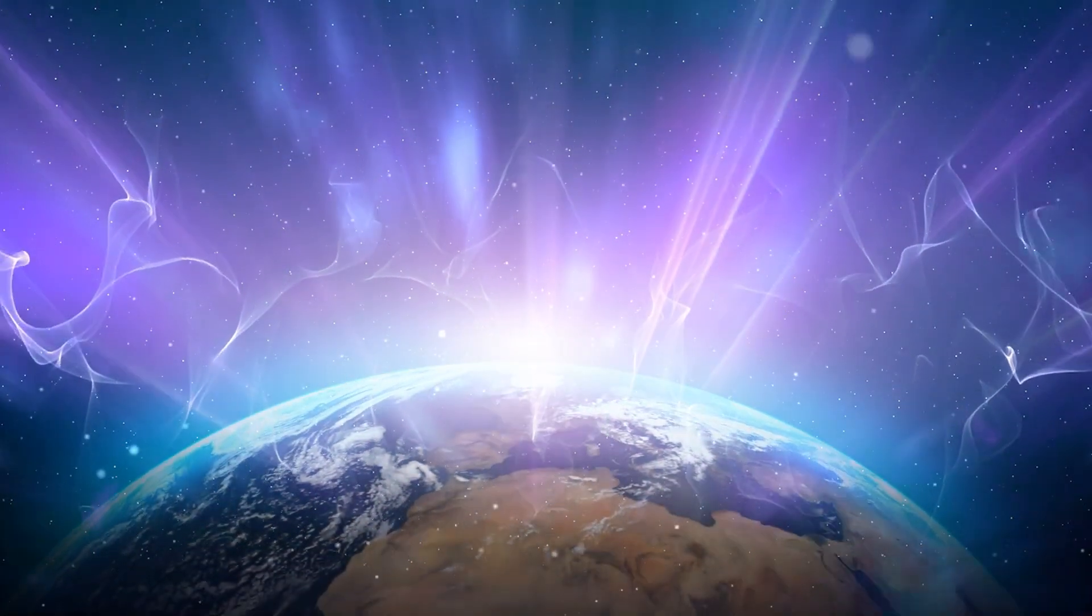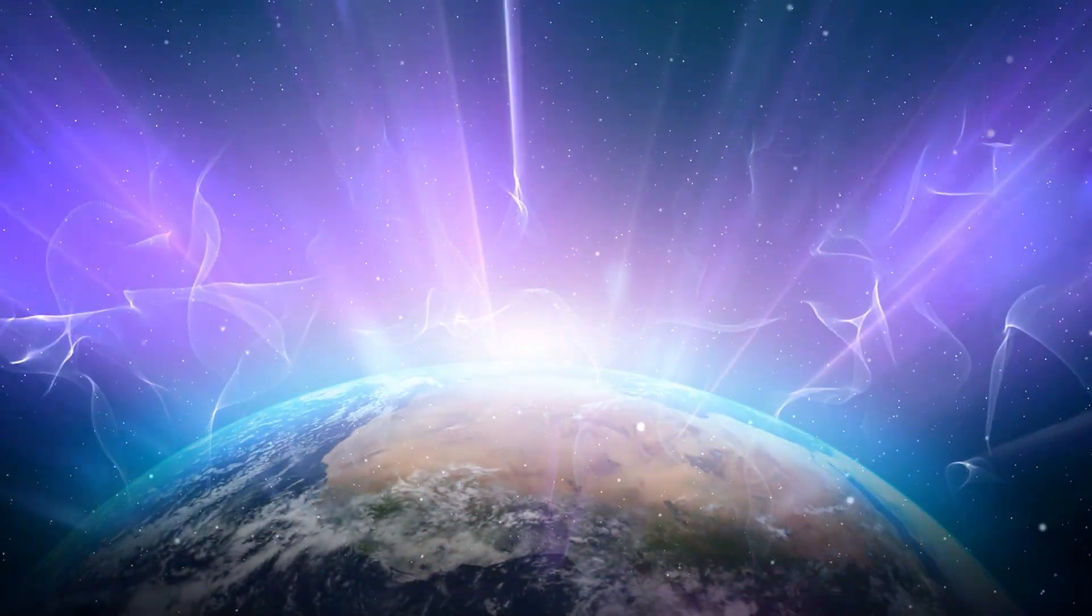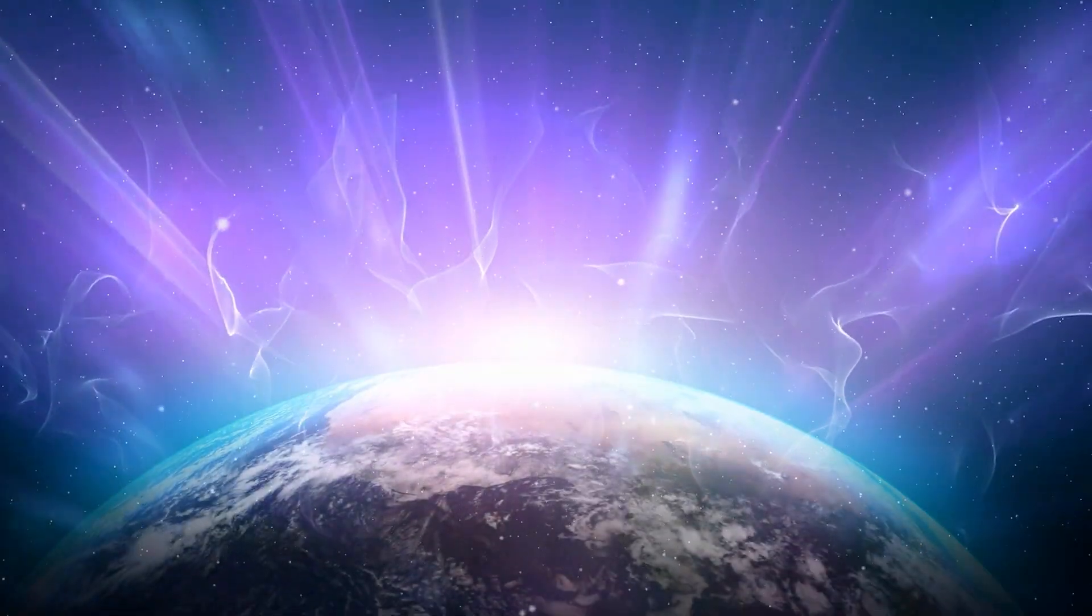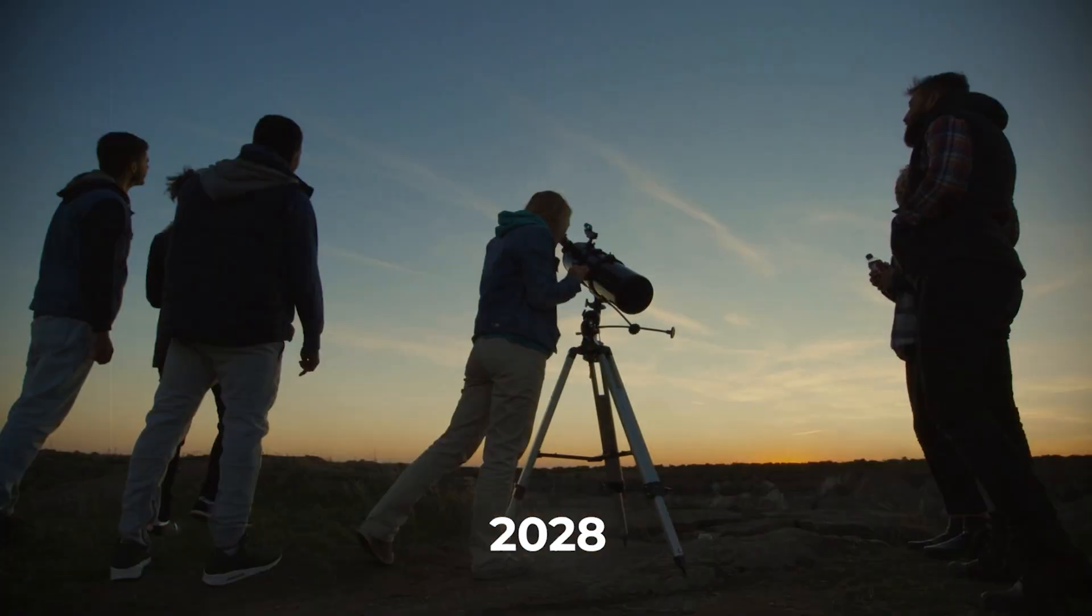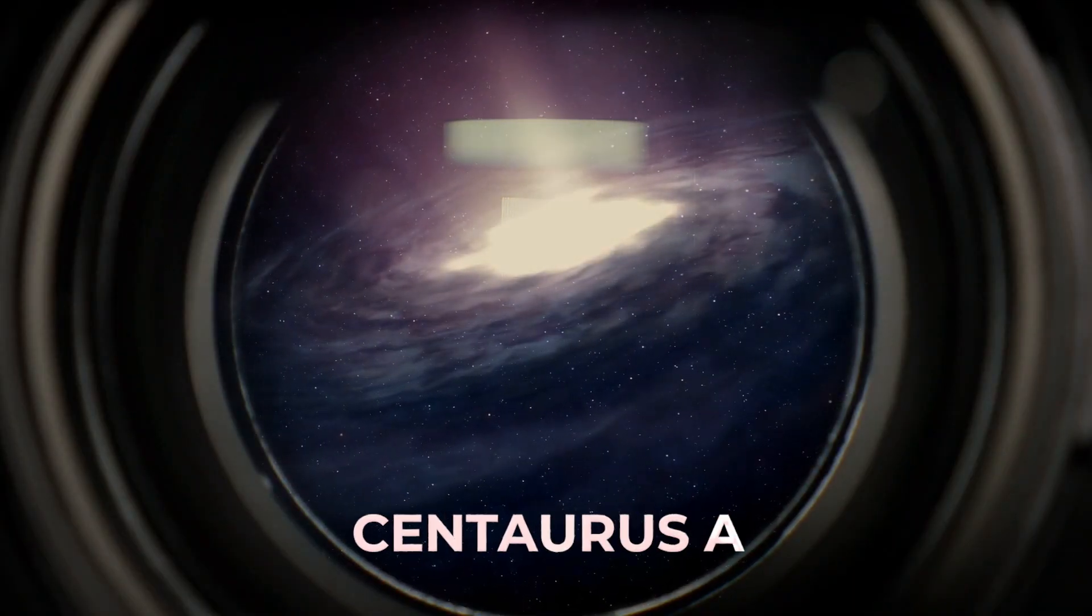The tricky part is that the paths of these rays get bent by magnetic fields on their way to Earth, making it hard to figure out where they came from in the sky. In 2017, astronomers thought they found a couple of interesting spots, one in Centaurus A.